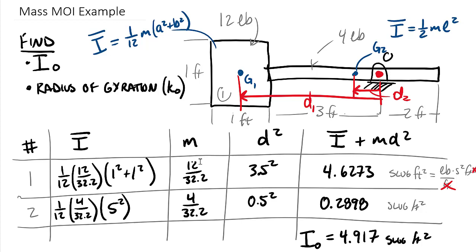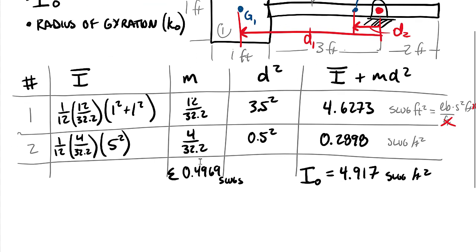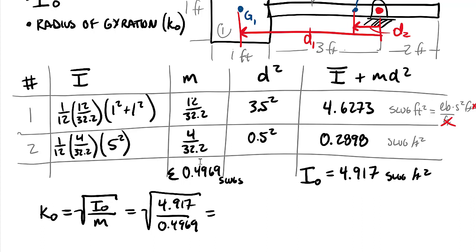So to move on to finding the radius of gyration, we have the sum of masses, and so we can actually sum down this column here. The sum of masses is equal to 0.4969 slugs. And so in order to find our radius of gyration, we know that k naught is equal to the square root of I naught, our moment of inertia about O, divided by my mass. And so putting the numbers in here, we end up with the square root of 4.917 divided by 0.4969, and this is equal to 3.146 feet.